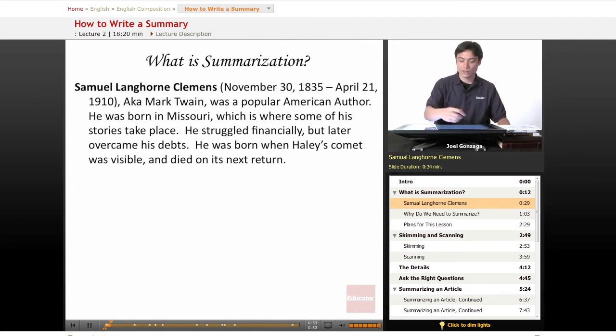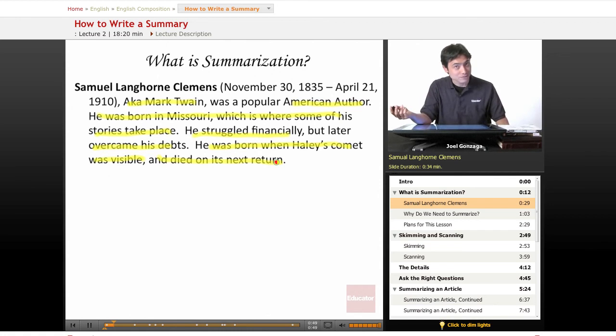Samuel Langhorne Clemens, aka Mark Twain, was a popular American author. He was born in Missouri, where many of his stories take place. He struggled financially, but later overcame his debts. He was born when Haley's Comet was visible and died on its next return. Well, that was much easier, wasn't it?